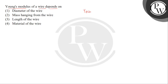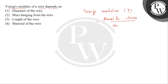First of all, let's see what Young's modulus is. It is denoted by the symbol Y and is the ratio of tensile stress to tensile strain. We can also call it longitudinal stress to longitudinal strain.